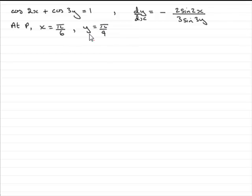We can do that just by substituting these two values into dy/dx. So let's start there and we can say that therefore dy/dx is going to equal minus 2 times the sine of 2x. So we've got sine of 2 times x which is π/6, and that's divided by 3 times the sine of 3y. So we have 3 sine 3y, y being π/9.